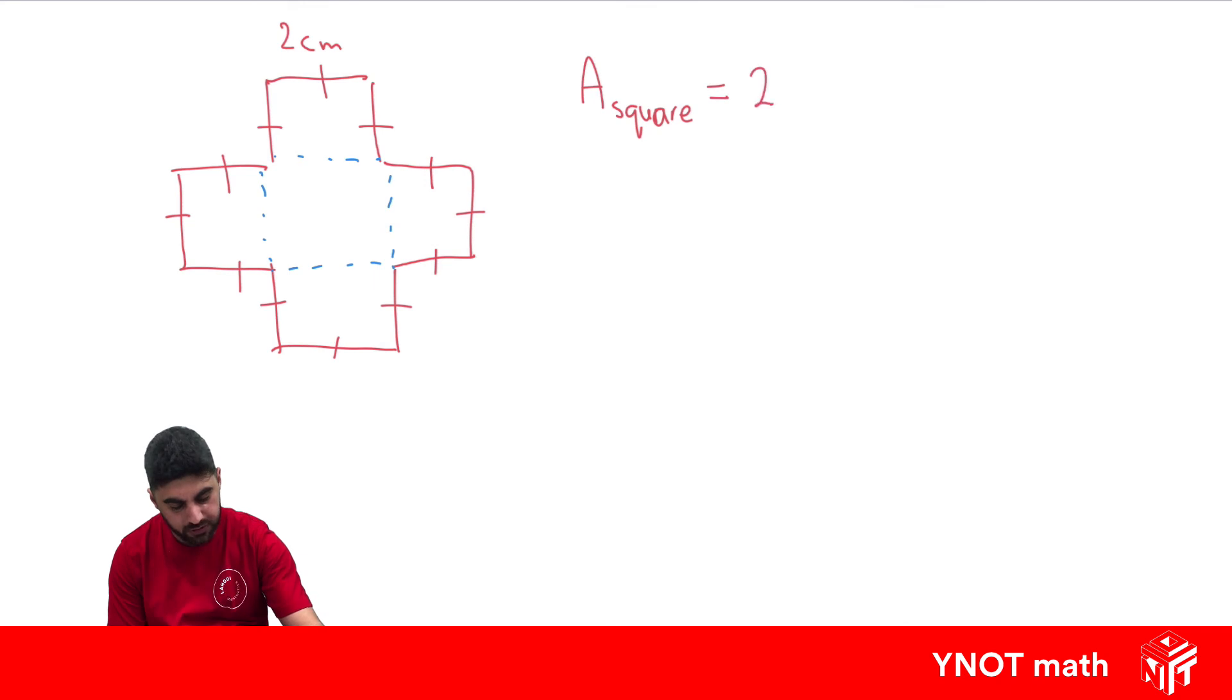by just doing the side itself squared, which is going to give us 4 centimeters squared. And we know there's 1, 2, 3, 4, 5 of them, so we just multiply all of that by 5, and our total area is going to be 20 centimeters squared.